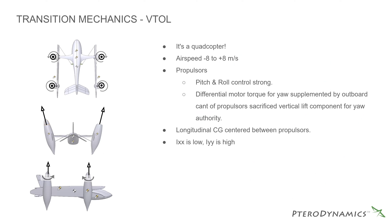A little about the transition mechanics from VTOL to fixed wing. In the VTOL position it's essentially a quadcopter — basic thrust vectors and torque reaction from the motors, no control surfaces, no lift, no drag. Nothing unusual: fly around at minus 8 to plus 8 degrees pitch and roll. Ixx is really low, Iyy is fairly high, and the longitudinal CG is centered between the propulsors.